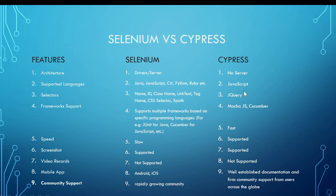Number three: Selectors. To select any web element, Selenium gives you lots of attributes — name, ID, class name, link text, tag name, CSS selector, and XPath. Cypress is also very limited, using jQuery, which is a CSS selector framework.